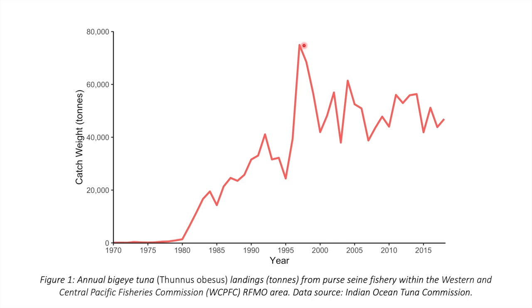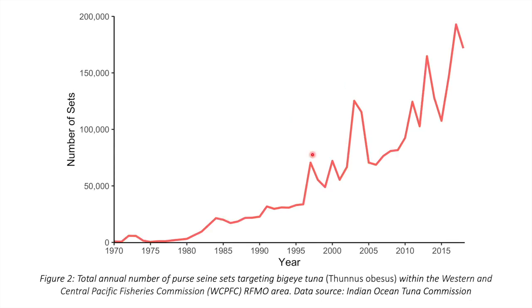However, on its own this data doesn't tell us much about the state of the stock. By plotting effort over time, we see that there is also a peak in 1997, and this correlates with the peak in landings that we previously saw. But instead of reducing after this, the general trend in the number of purse seine sets continues to increase.